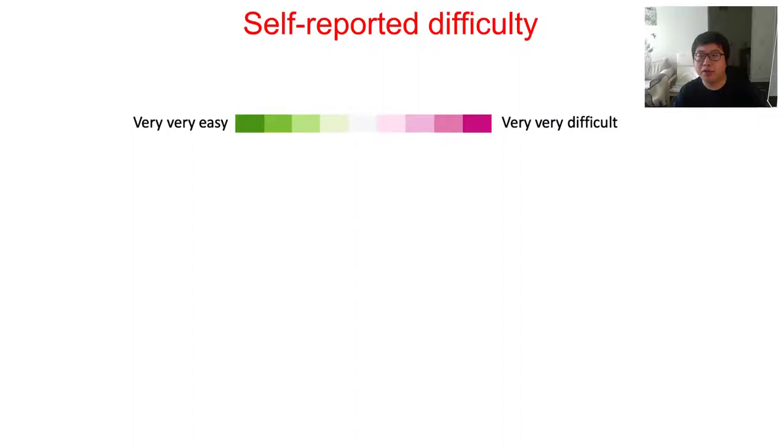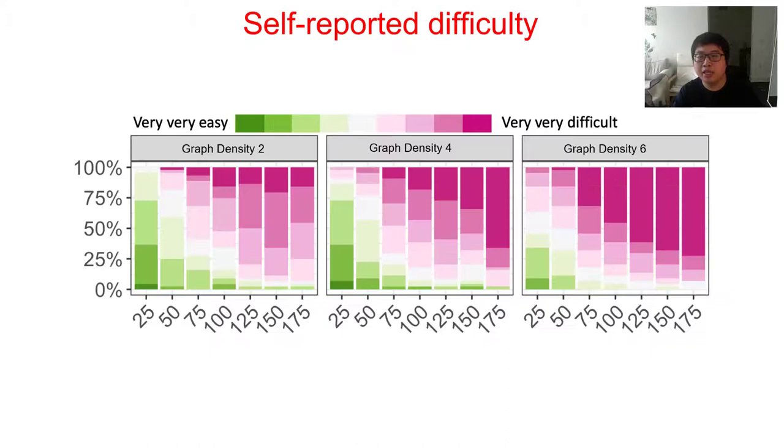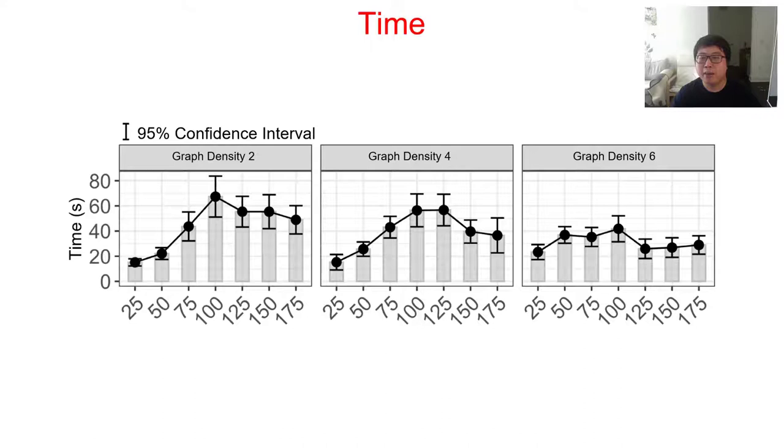Let us then look at another commonly used measure, self-reported difficulty. We asked our participants to rate in 9 points Likert scale for each trial from very, very easy to very, very difficult. Here, we use the same type of chart to show the distribution. Like the accuracy, the trend is predictable. There is an overall positive correlation between the number of nodes and the reported difficulty in all graph densities.